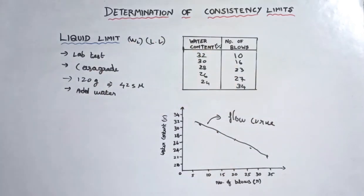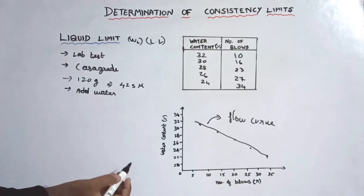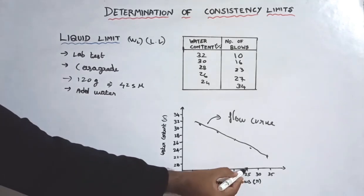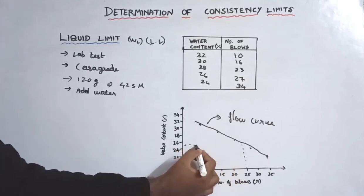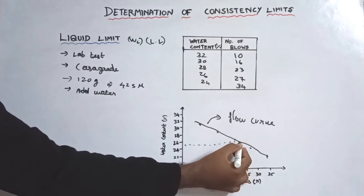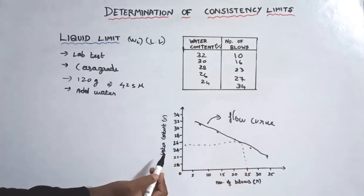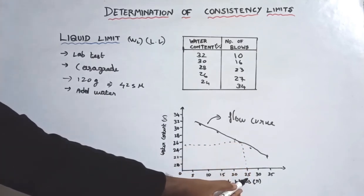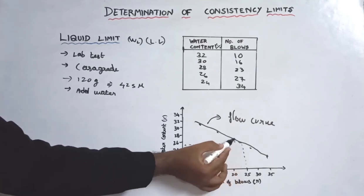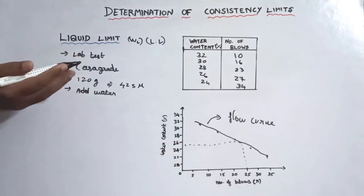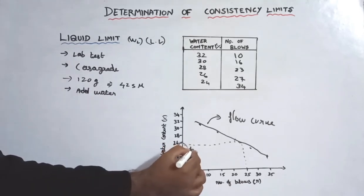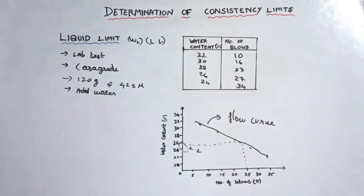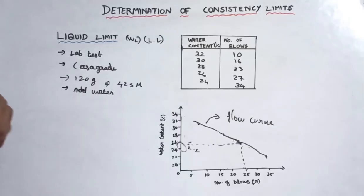This line is called the Flow Curve. From the flow curve, we read off at the 25th blow — what water content corresponds to 25 blows. The water content at 25 blows is the Liquid Limit.